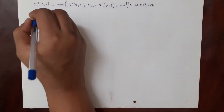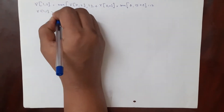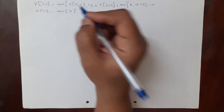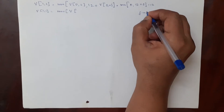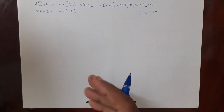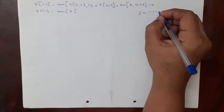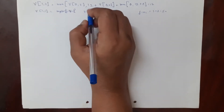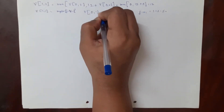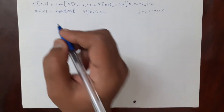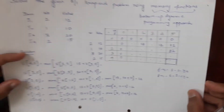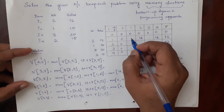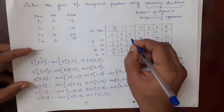Next, v of 1 comma 1: j minus wi is 1 minus weight of the first item (2), which is less than 0. So we just use v(i minus 1, j) = v(0,1). From the table, 0 comma 1 is 0. Therefore v(1,1) = 0, and we fill this entry with 0.